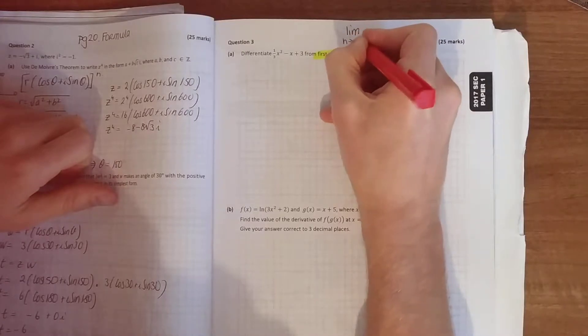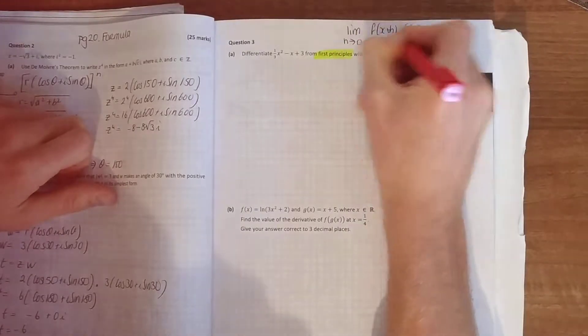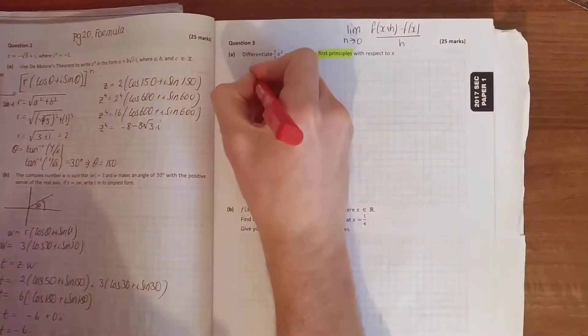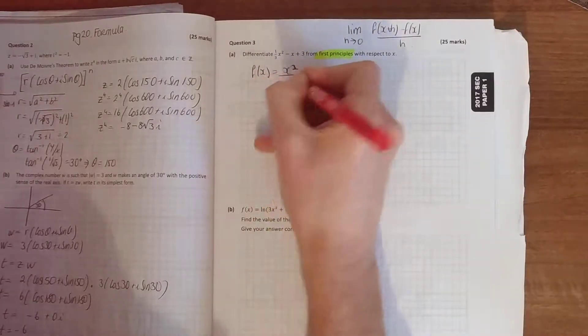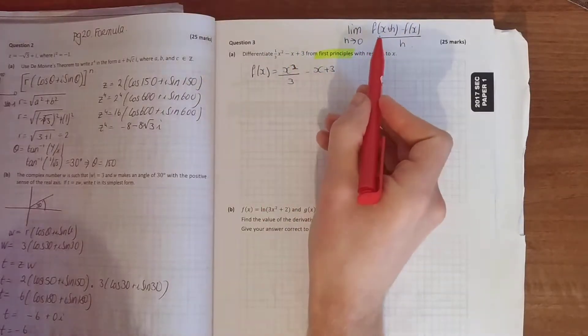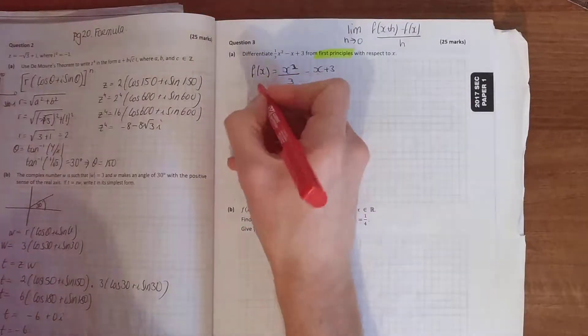The limit as h approaches 0 of f(x + h) minus f(x) over h. Now in that formula we already have f(x). f(x) is a third of x squared minus x plus 3. In order to find out f(x + h), all you've got to do is sub in x plus h instead of x.